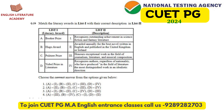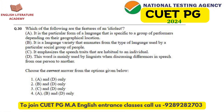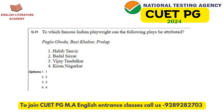Question 30 is related to linguistics — specifically the theory of idiolect. Question 31 mentions some Indian plays whose playwrights need to be identified. Anyone who has even read about Indian playwrights superficially will be able to answer this question.